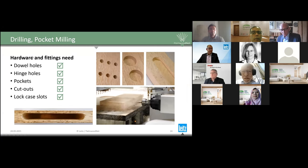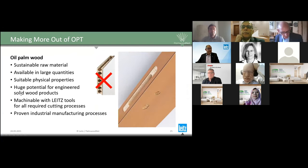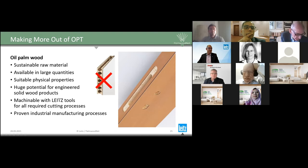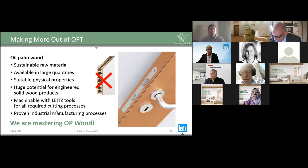In conclusion: oil palm wood is a sustainable raw material available in large quantities. It has suitable physical properties and therefore there is a huge potential for engineered solid wood products such as these structural panels. The material is machinable with our tools for all required cutting processes. We have proven industrial manufacturing processes, and the PalmwoodNet group can now say: we are mastering palm wood. This is the end of my presentation — please don't hesitate to ask questions.